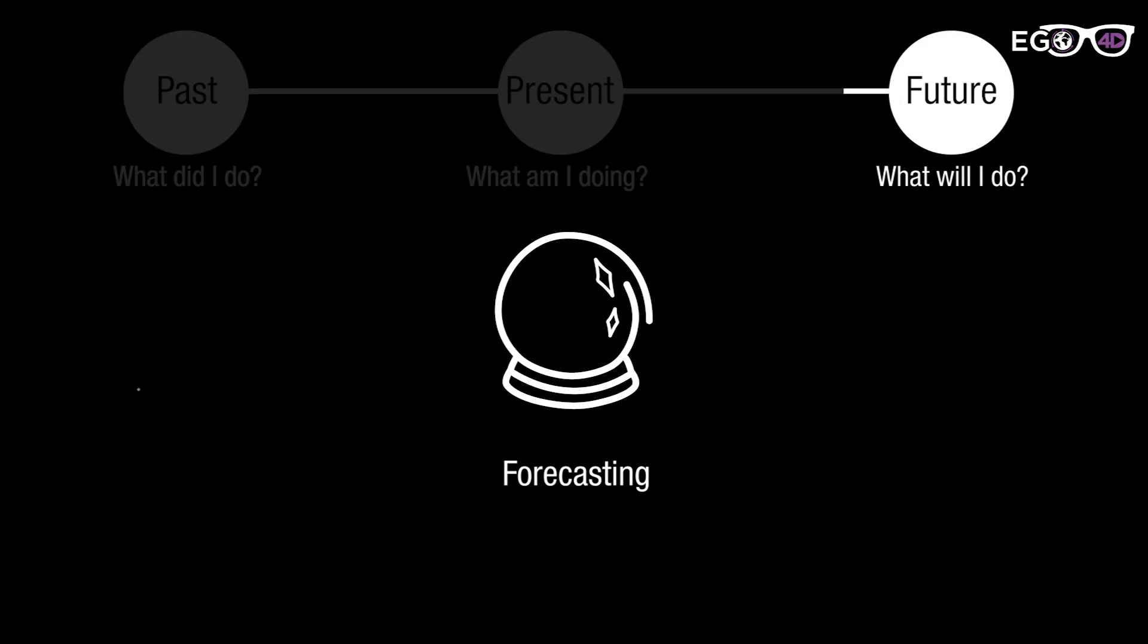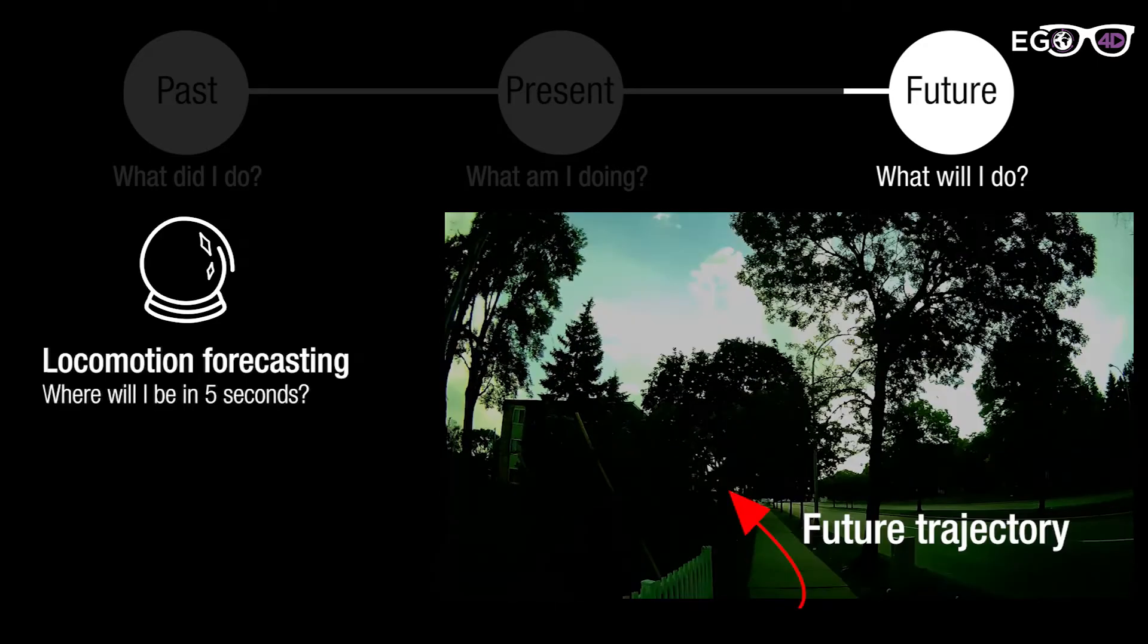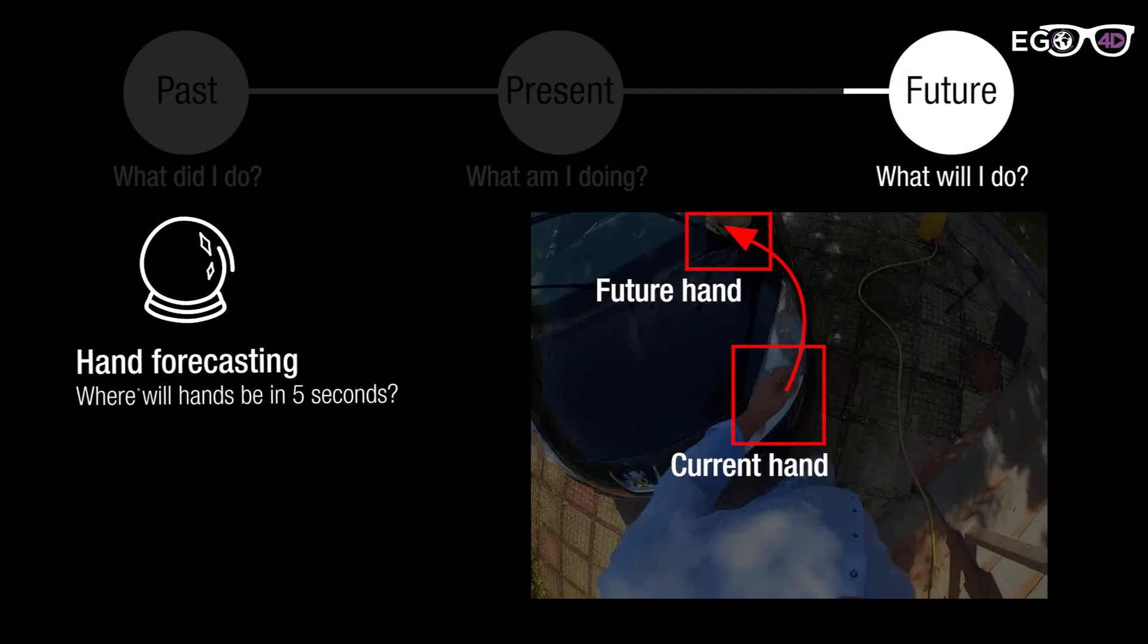We study activity understanding of what will I do in the future using future prediction tasks. The locomotion forecasting task is to predict the future locomotion trajectory of the camera wearer in 5 to 10 future seconds. Hand forecasting is to predict future hand trajectories.